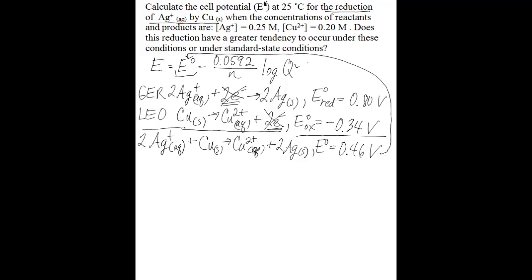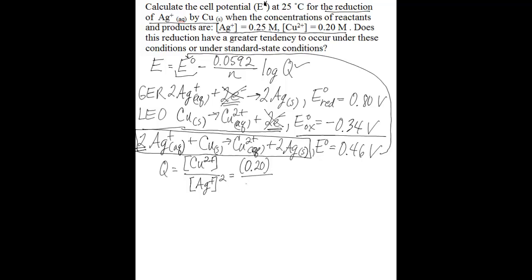The next thing you need to do is find Q, the reaction quotient. The given concentrations indicate non-standard conditions because we don't have a molarity of one. To calculate Q, you take products over reactants using the overall balanced redox equation. Q equals the concentration of Cu²⁺ divided by the concentration of Ag⁺ squared, because of the stoichiometric coefficient of 2 for silver. Substituting in 0.20 M divided by (0.25 M)² gives a reaction quotient of 3.2.